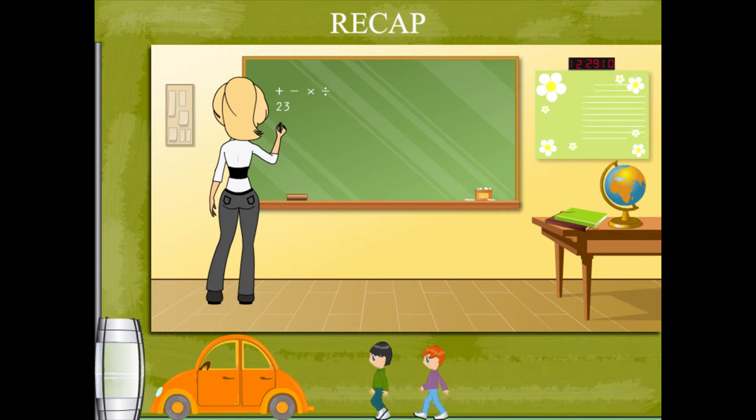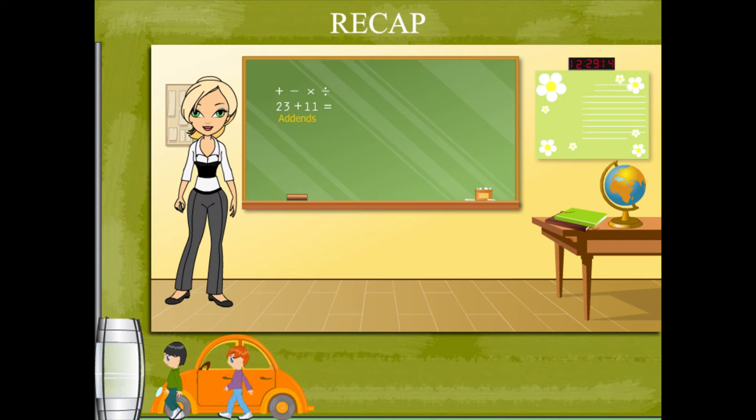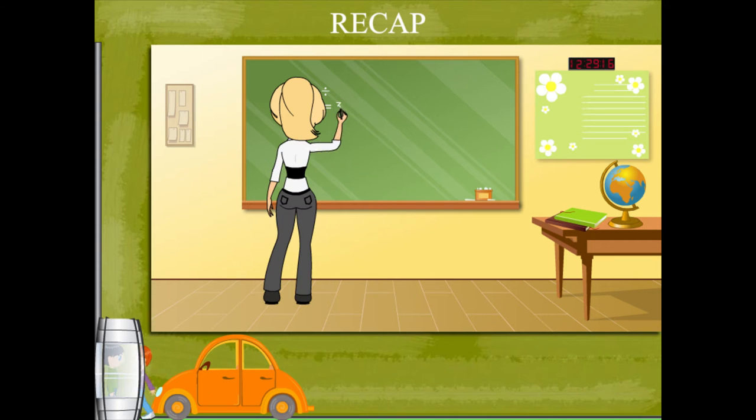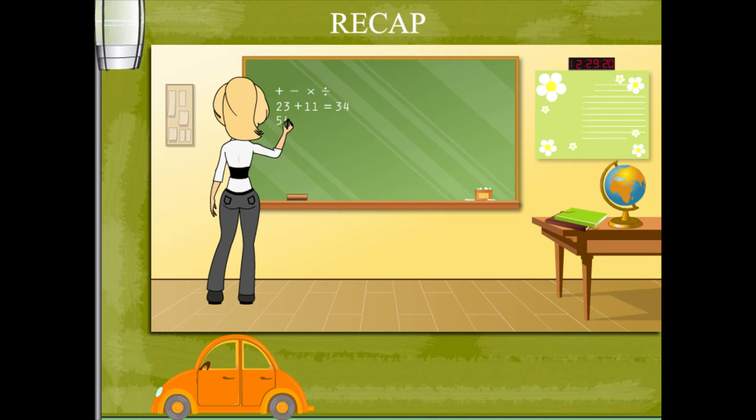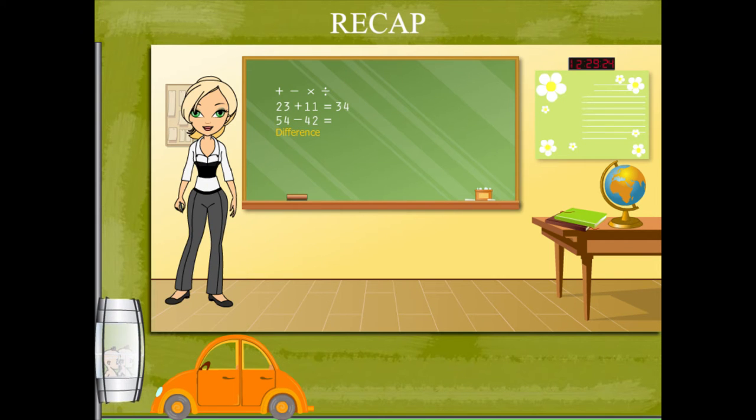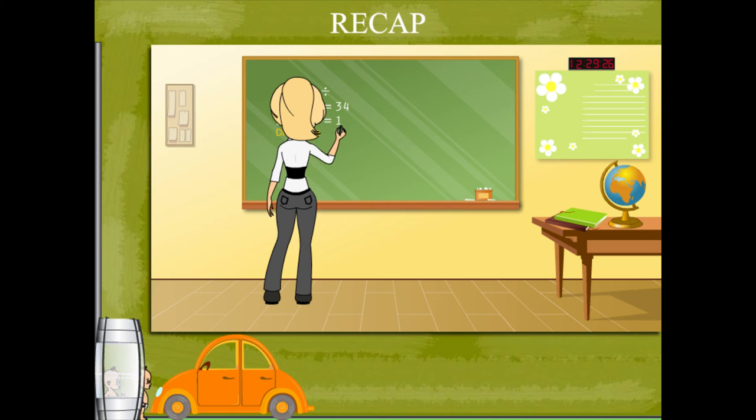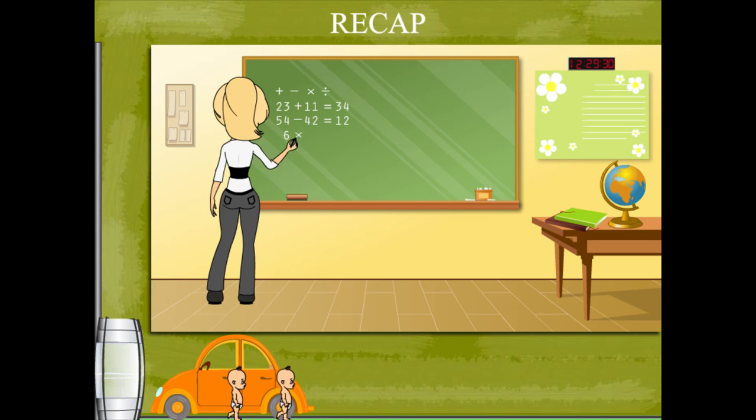She defines the terms by examples: 23 plus 11 equals 34. 23 and 11 are addends, and 34 is called the sum. 54 minus 42 is calculating the difference, and 12 is the difference number.